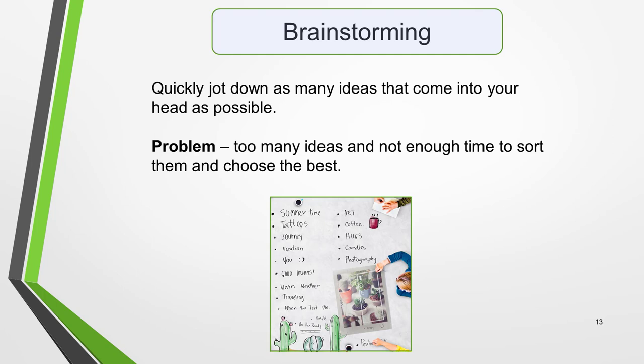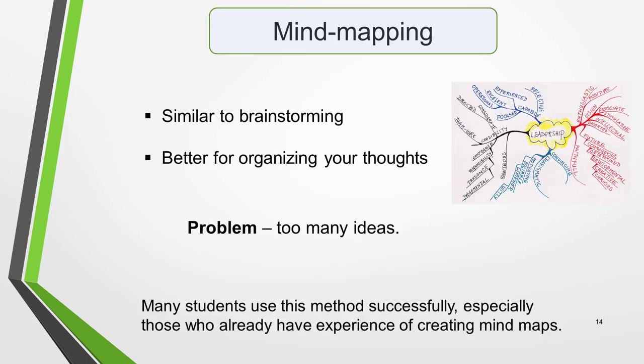Brainstorming is where you quickly jot down as many related ideas that come into your head as possible. The drawback with this method is that you can end up with lots of ideas but not enough time to sort them and pick out the most relevant ones before you have to start. Mind mapping is similar to brainstorming, but will help you to organise your thoughts as they come to you by relating each thought to a specific part of the question. You can still have a problem with too many ideas, but many students use this method successfully, especially those who already have experience of creating mind maps.